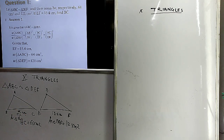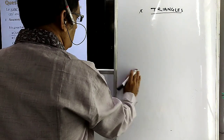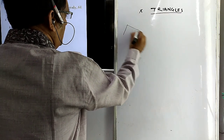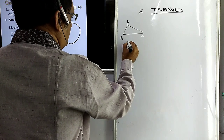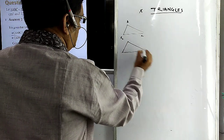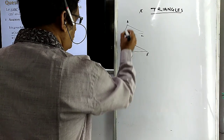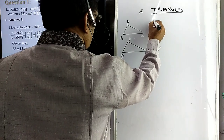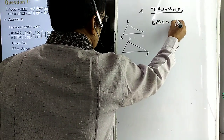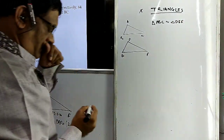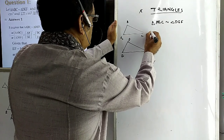You know that these two triangles are similar — triangle ABC and triangle DEF are similar. So triangle ABC is similar to triangle DEF. You know that the ratio of areas of two similar triangles is equal to the ratio of the squares of their corresponding sides.